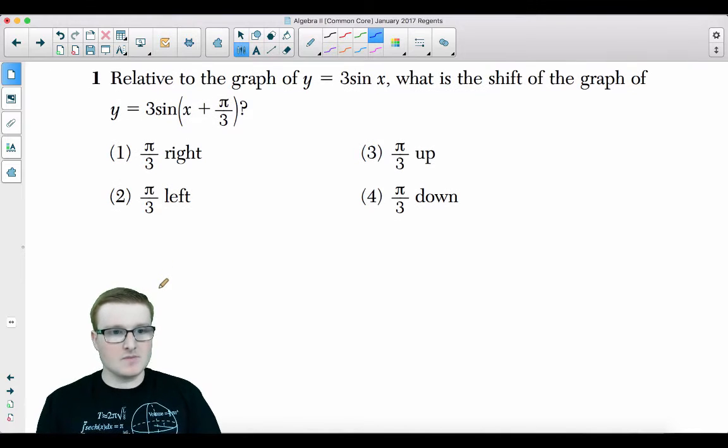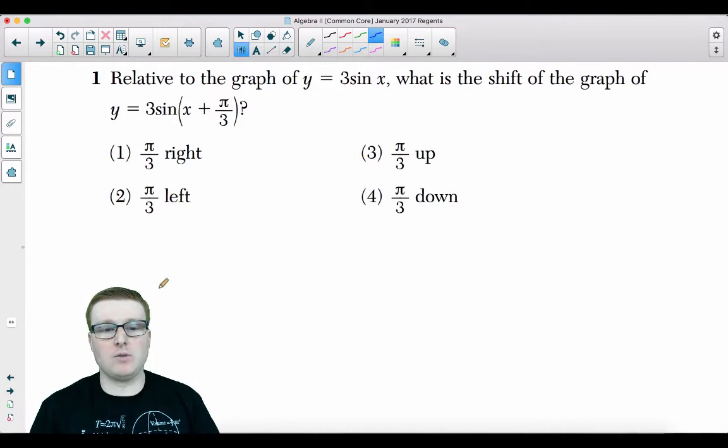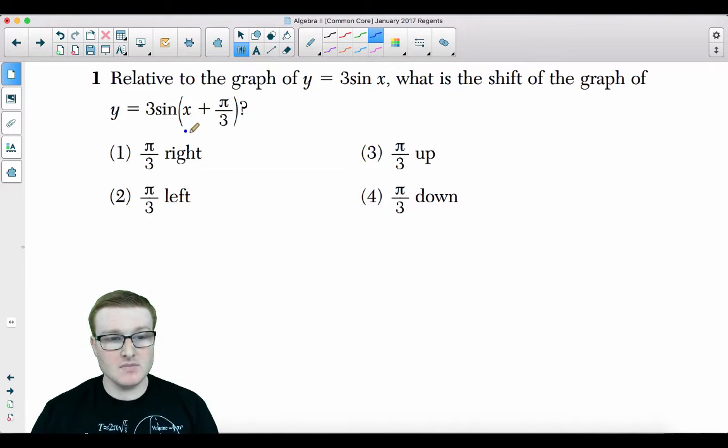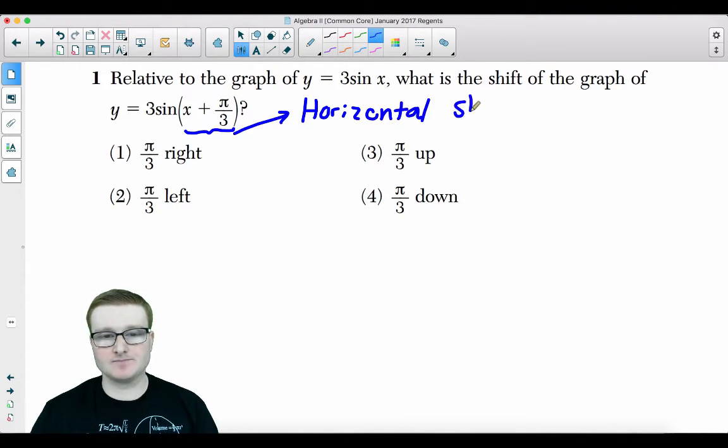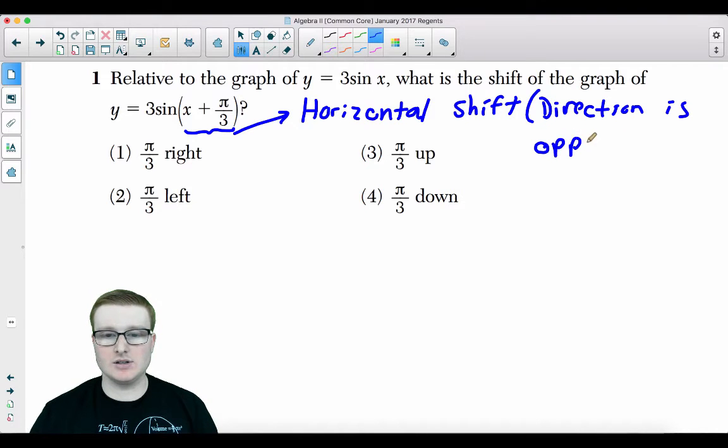Number 1 says, relative to the graph of y equals 3 sine of x, what is the shift of the graph of y equals 3 sine of x plus pi over 3? So here's what you got to know. If the shift is inside of the parentheses, it is always going to be a horizontal shift. And its direction is opposite the sign.